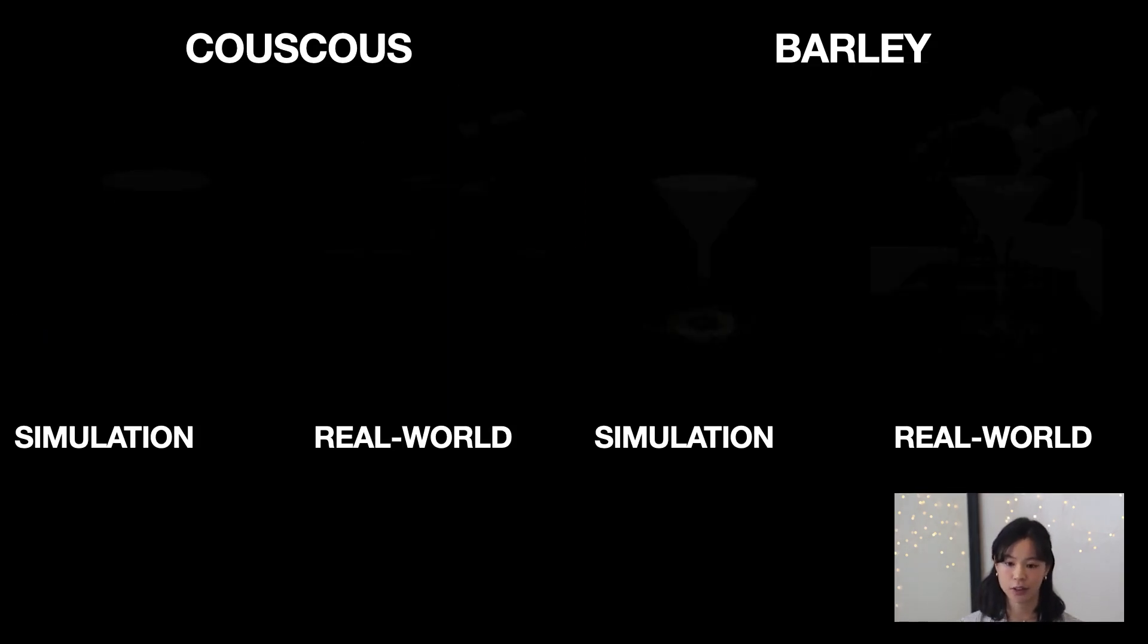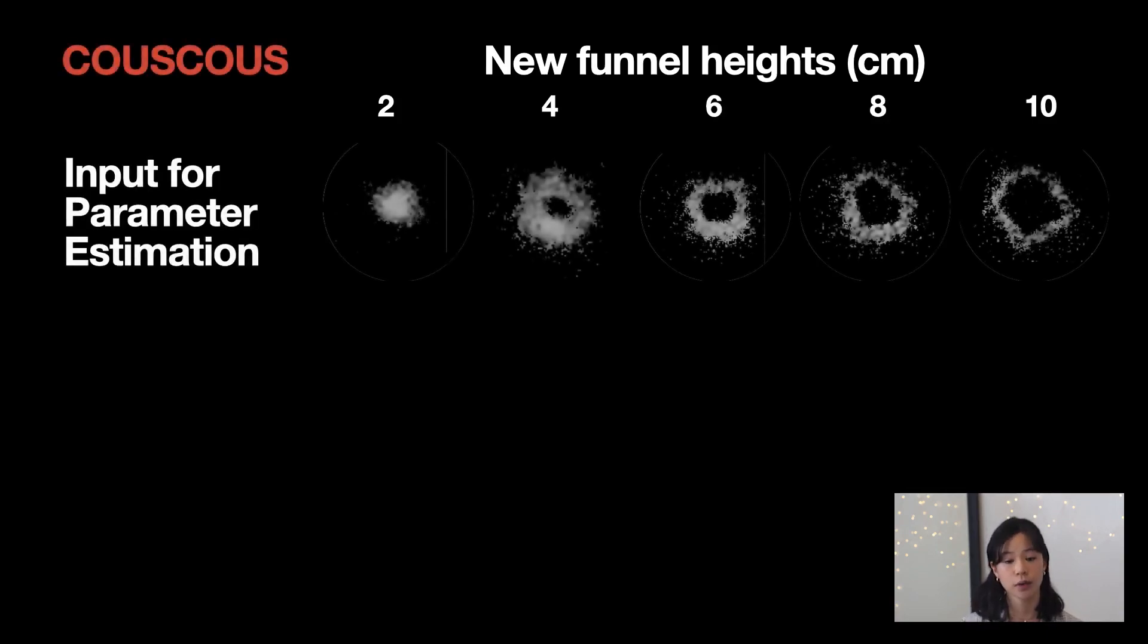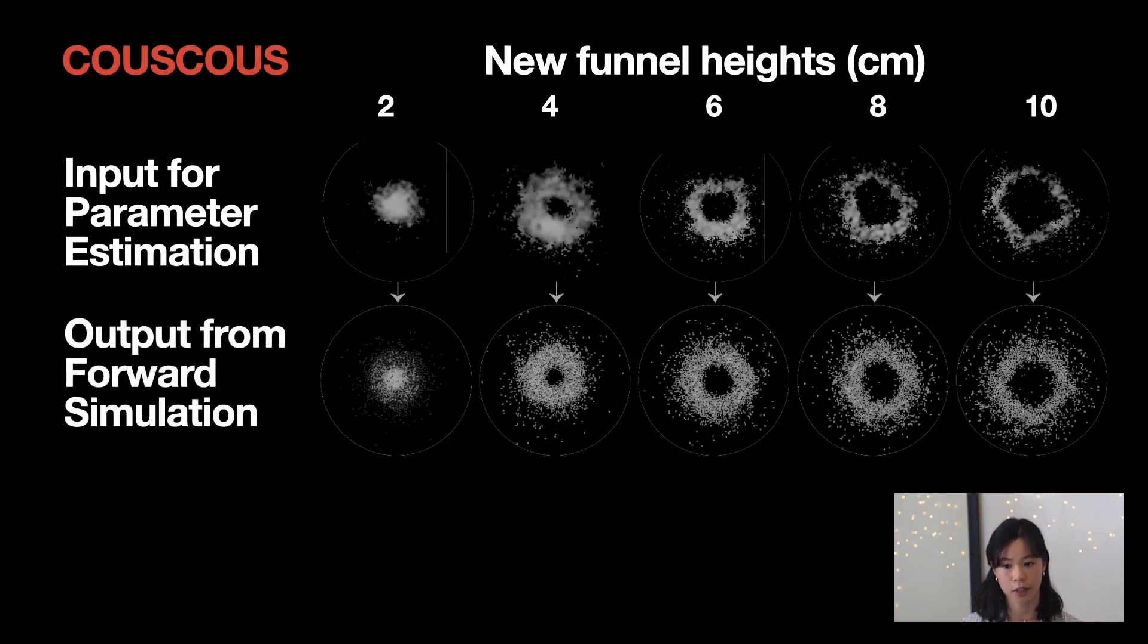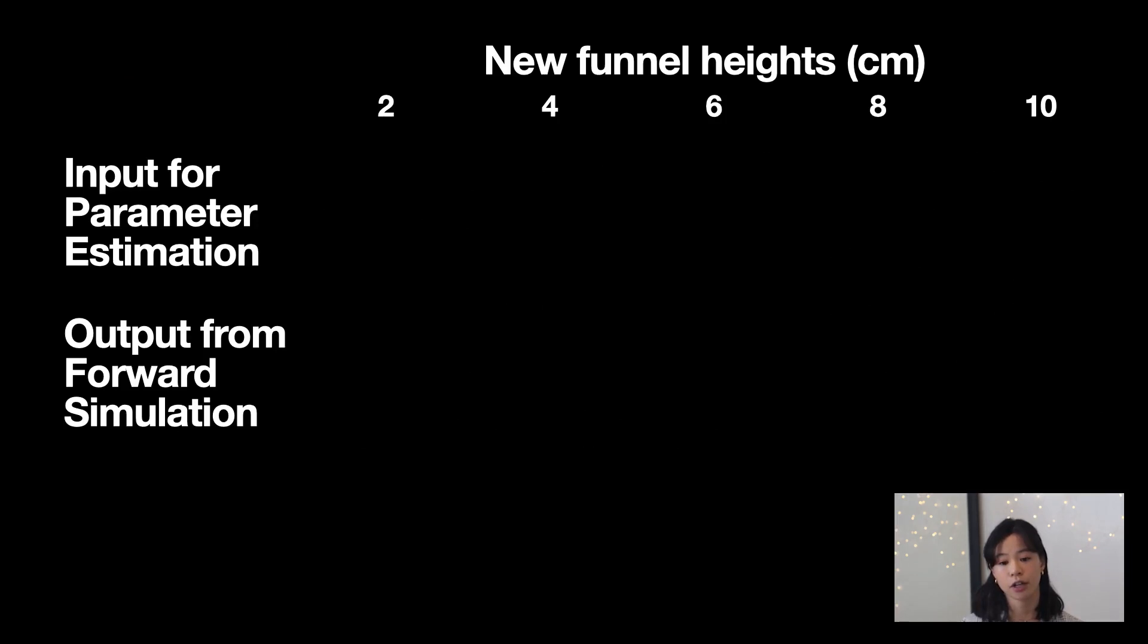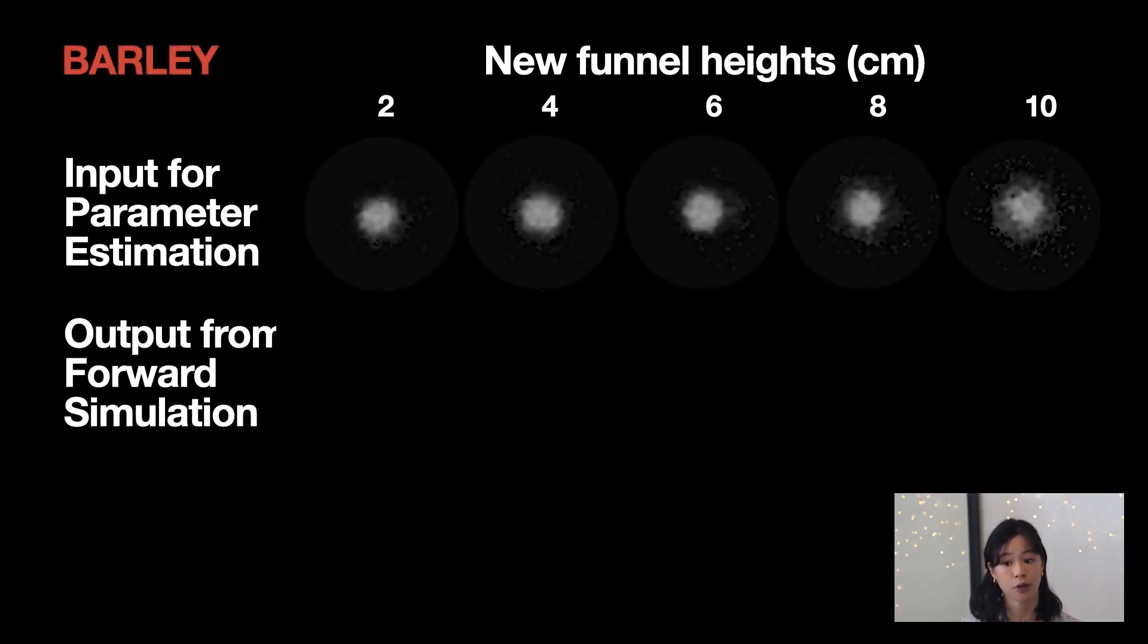This was an exciting result, but it was critical to test how well these parameters generalized to pours at different heights. Thus, five more heights were tested for each grain, and for each of these pours, forward simulation was run with the same inferred granular parameters. By comparing the simulated and real granular formations, we saw that the inferred parameters generalized reasonably well for both couscous and barley.